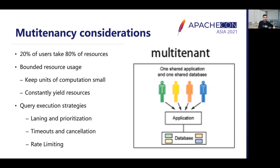Next is multi-tenancy. It is common for 20% of your users to take 80% of cluster resources. It is important to keep resource usage bounded by keeping units of competition small and constantly yielding resources for higher priority queries. Over time, Apache Druid has gained many good features to handle multi-tenancy, including query laning, query prioritization, query timeouts, query cancellation, and rate limiting of individual tenants. All these features, when configured properly, can mitigate most multi-tenancy issues.